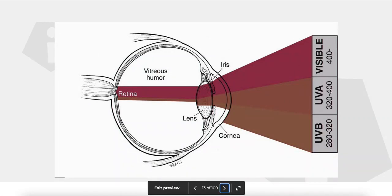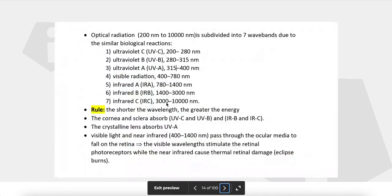The visible spectrum can pass through the ocular media to reach the retina. Ultraviolet A passes through the cornea and is mostly blocked by the lens, with only minimal amounts reaching the retina. Ultraviolet B is blocked by the cornea and is responsible for photokeratitis. Ultraviolet A can cause a bluish discoloration of images after cataract extraction and IOL implantation, if the IOL lacks a UV filter, since the protective effect of the lens against ultraviolet A is no longer present.